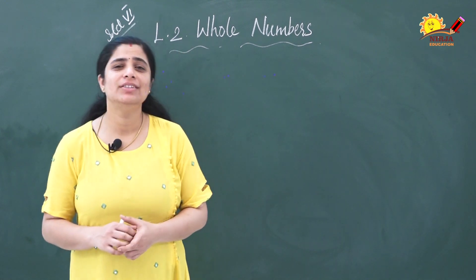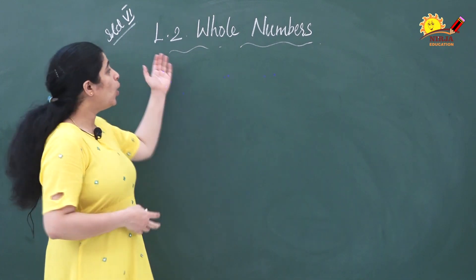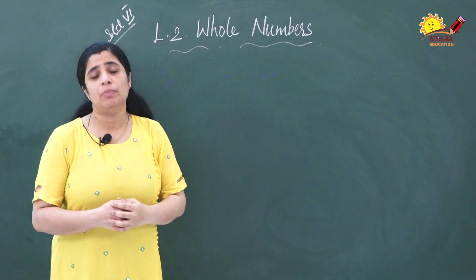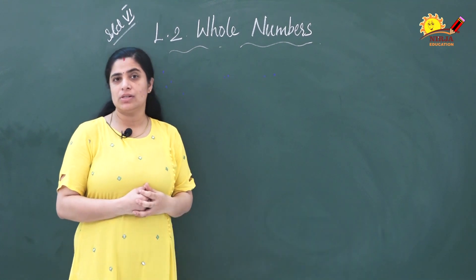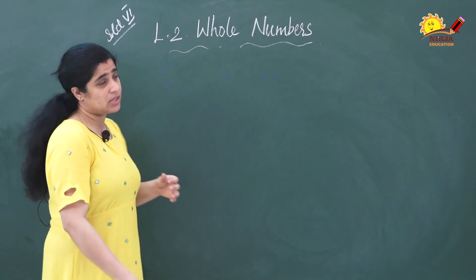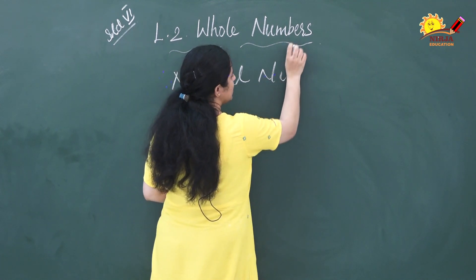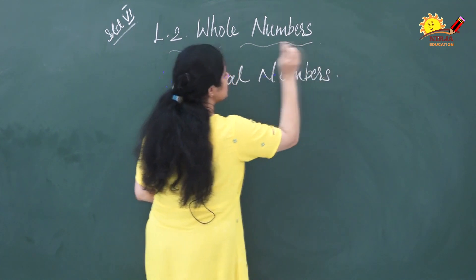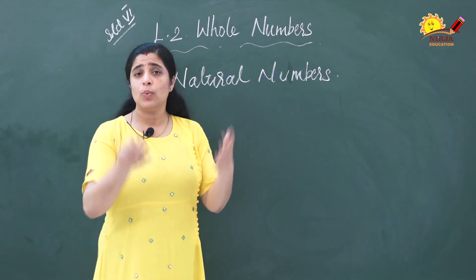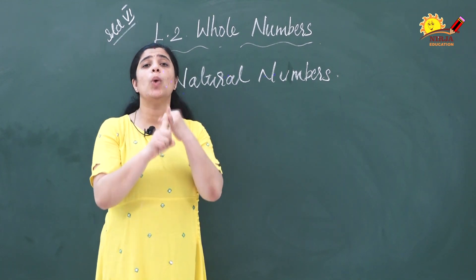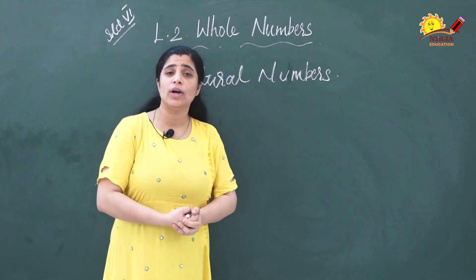Hi everyone, we are going to discuss the second chapter of Standard 6 Math, that is whole numbers. Before going to this chapter, please subscribe to our channel Nirja Education. Before discussing what are whole numbers, first we will see what are natural numbers. The another name of natural numbers is counting numbers — because when we start counting, we start from one, two, three, and so on.